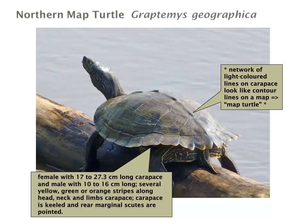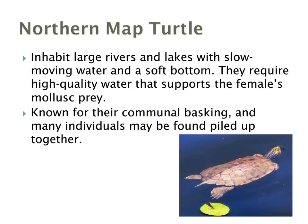The northern map turtle is so named because of the yellow, green, or orange stripes that occur all over the body, including the carapace. Looking carefully at the head and neck, you'll see contour lines — hence the name 'map' — present there. Also notice that the marginal scutes at the rear are quite pointed, similar to but much more pronounced than the snapping turtle. Northern map turtles generally inhabit larger rivers and lakes with slow-moving water. They require very high water quality because of the mollusks that females eat, and they're known for communal basking, often found piled up together.